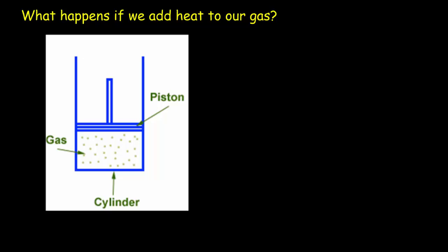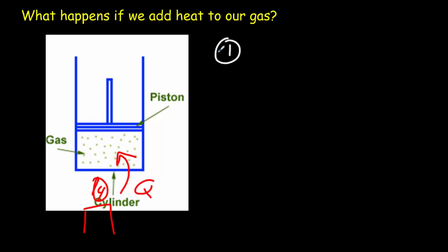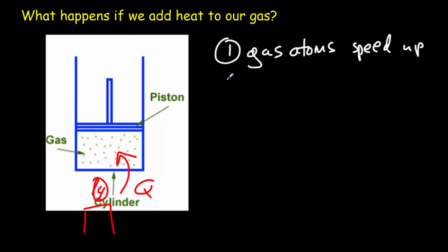Let's take our simple system and do the simplest thing we can think of: add some heat energy to our gas. We'll put a flame below the gas and transfer some heat energy to it, then ask what can possibly happen. Well, the first thing is that the gas atoms can speed up, which means there's an increase in temperature. And that means the internal energy of the gas — the sum of the random kinetic energies of all the molecules — is also going to increase.